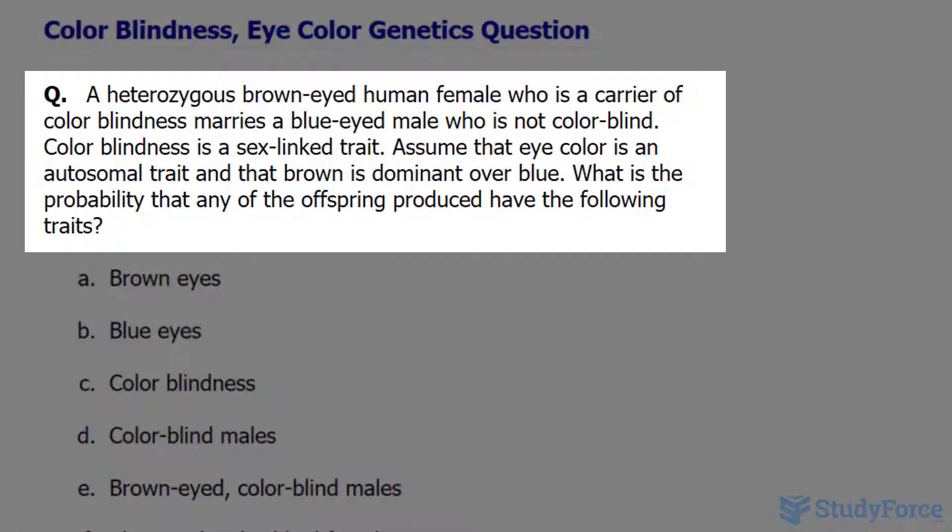The question reads: a heterozygous brown-eyed human female who is a carrier of colorblindness marries a blue-eyed male who is not colorblind. Colorblindness is a sex-linked trait, and that means that the gene associated with colorblindness is located on the sex chromosomes.